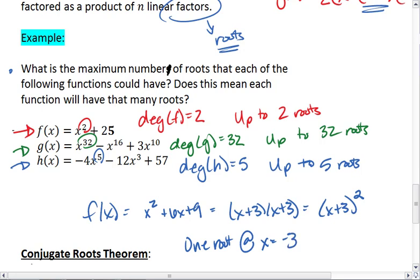So for this one, even though the degree is 2, I only have one root. The point of the linear factors theorem is that it tells us the maximum possible roots we can have.